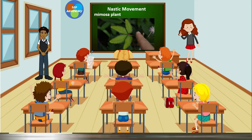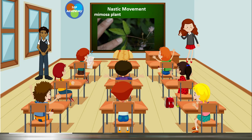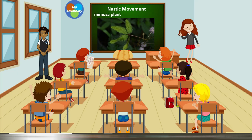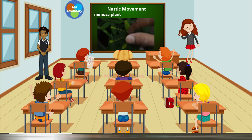Let's look at the mimosa plant, or the shame old lady. It is showing nastic movement, and let's be reminded that nastic movement is reversible, non-directional, and it's not a growth movement. Even though the plant is being affected by an external stimulus, it's not the entire plant showing this movement — leaf by leaf, the changes are evident.